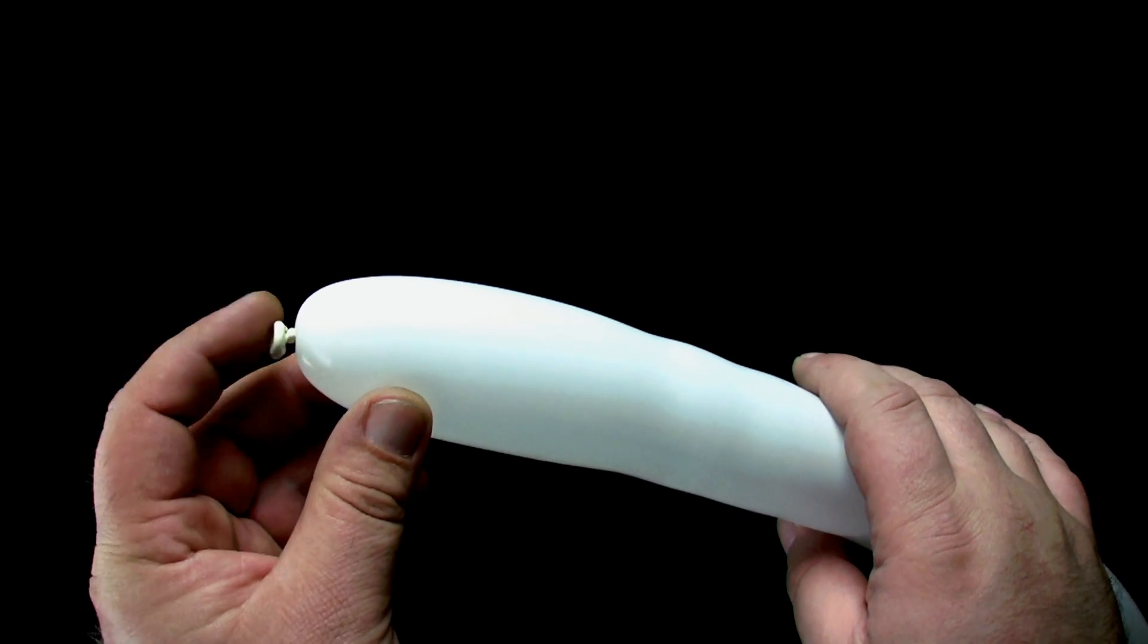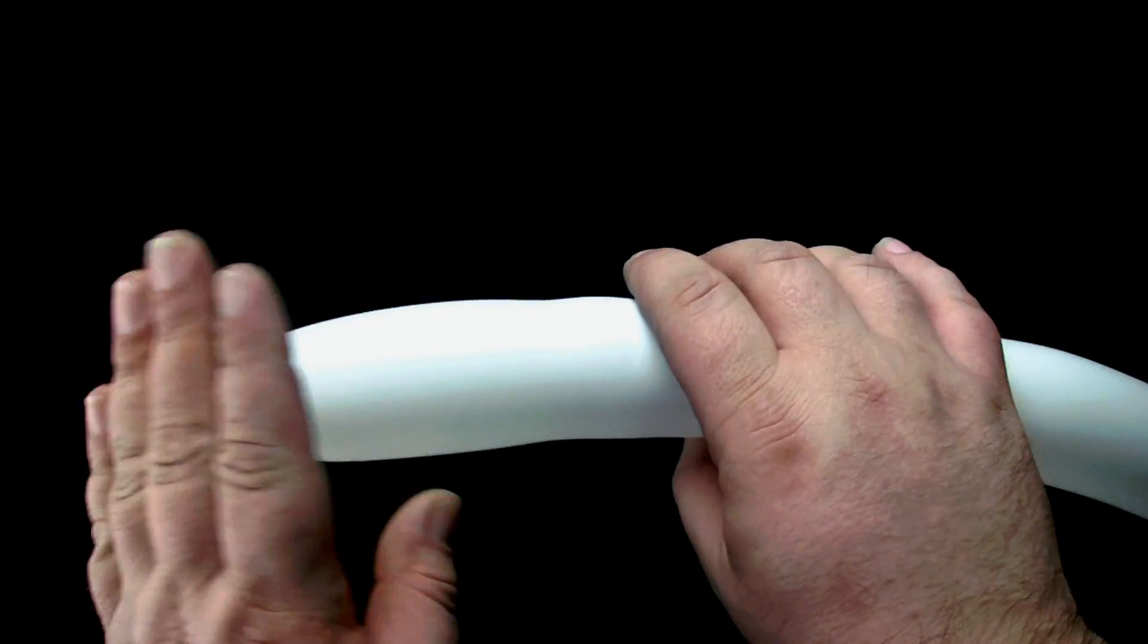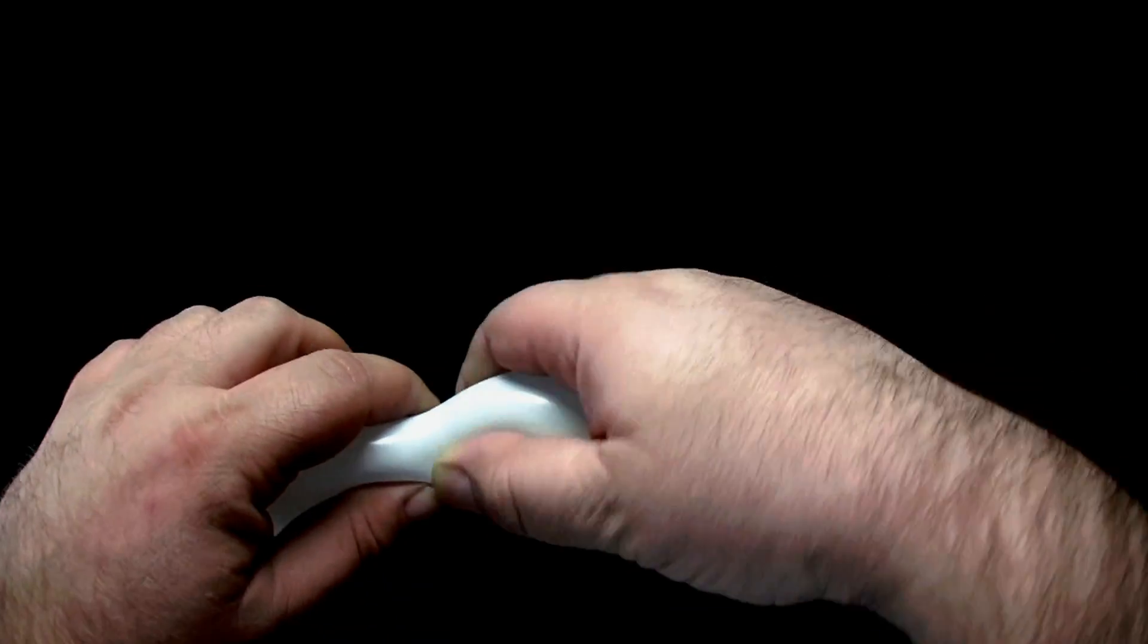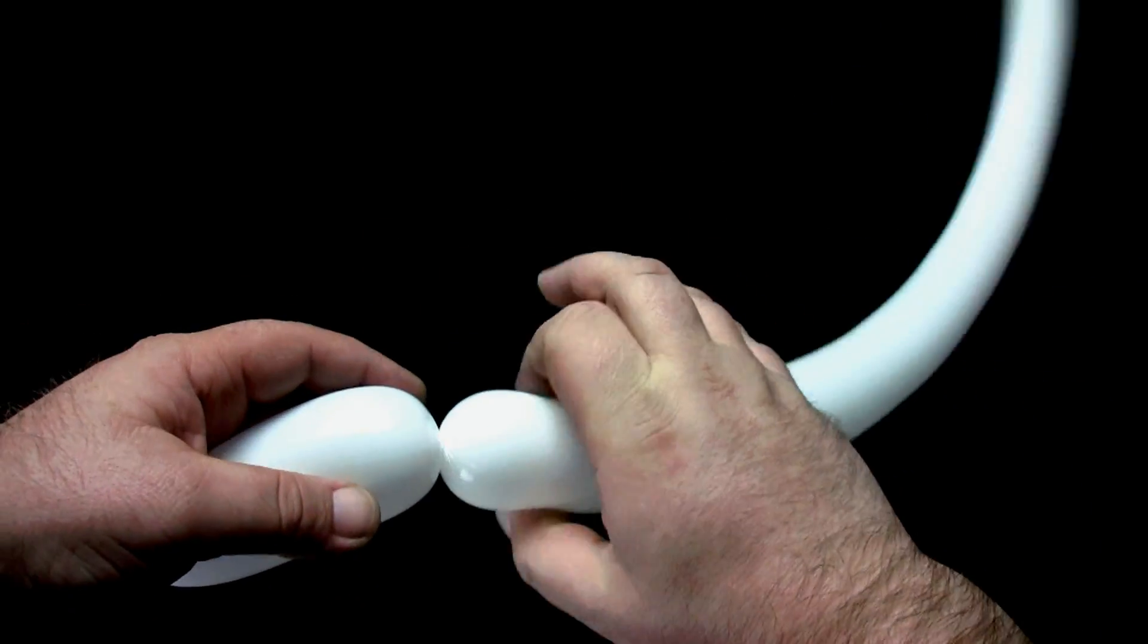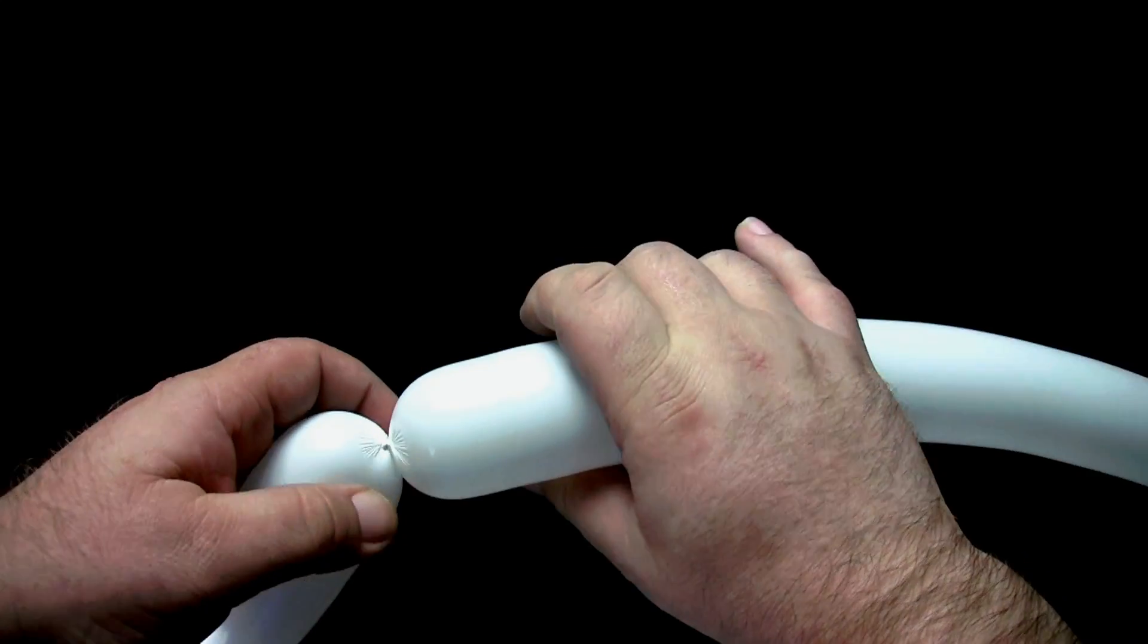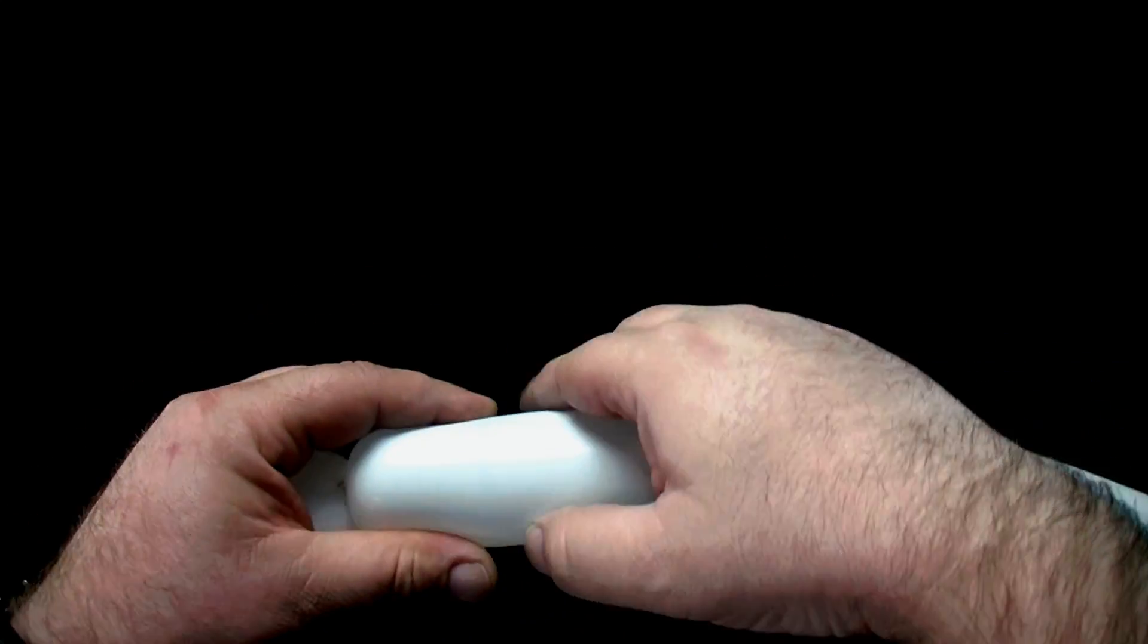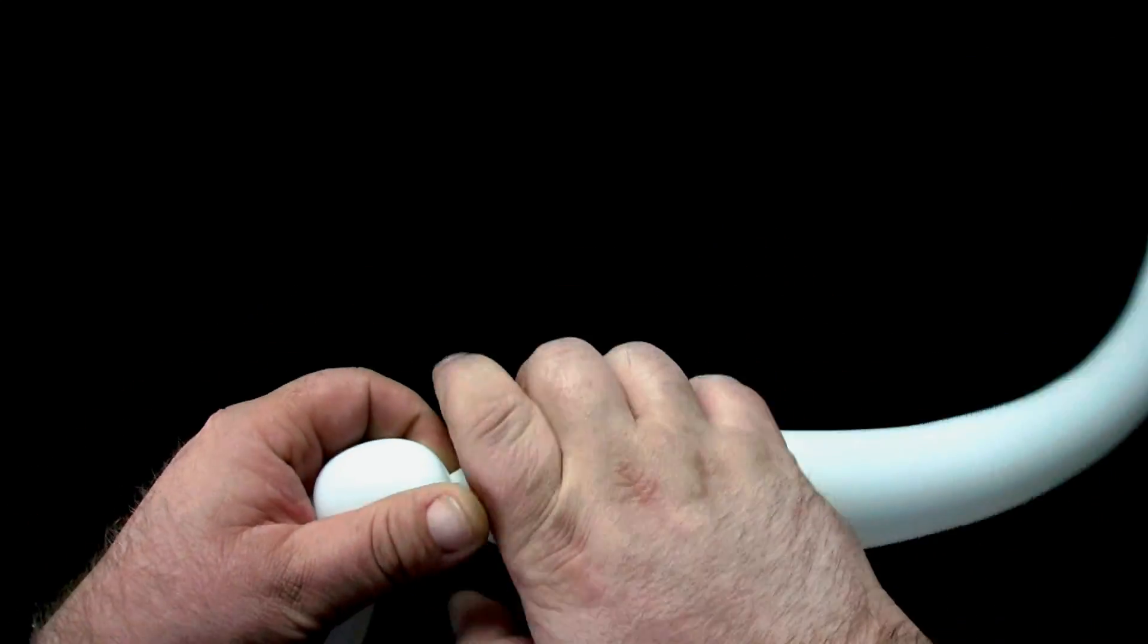Start twisting your design at the nozzle end of the balloon. Begin with a four finger bubble. While holding on to the first bubble so it does not untwist, make a one finger bubble, taking care to always twist in the same direction.